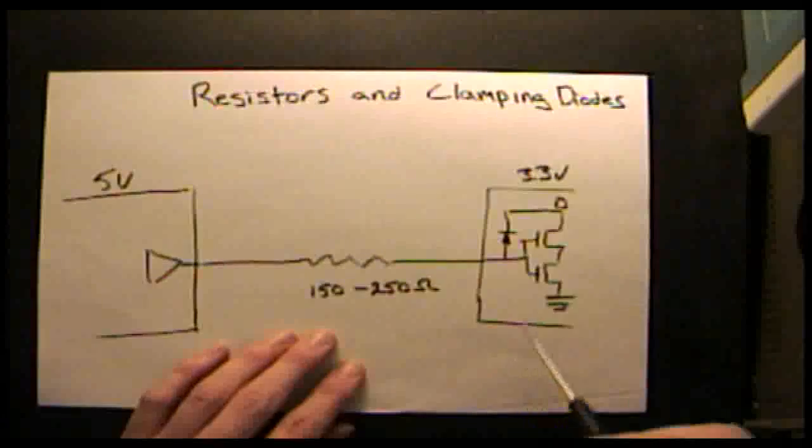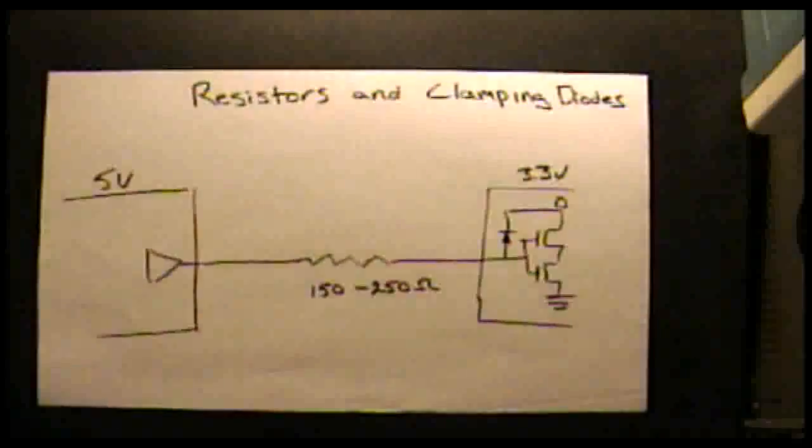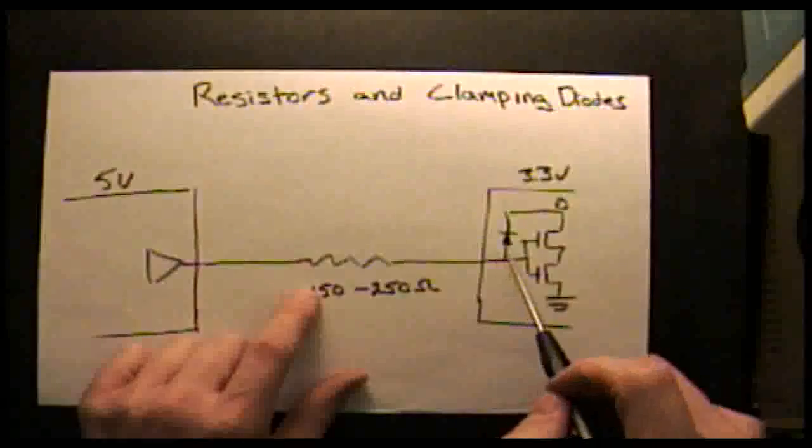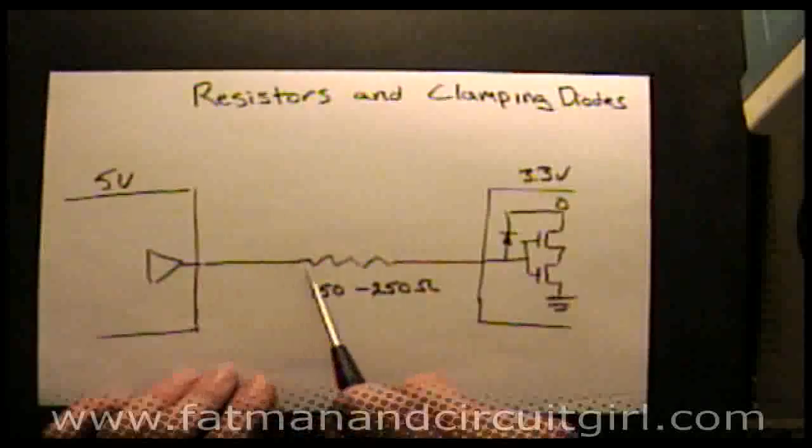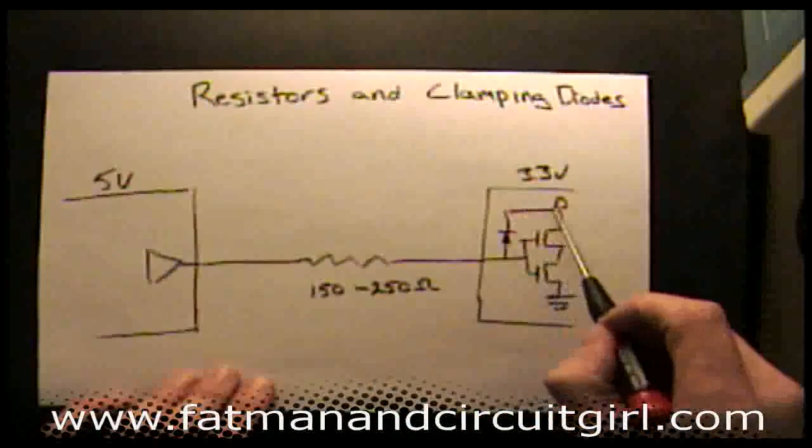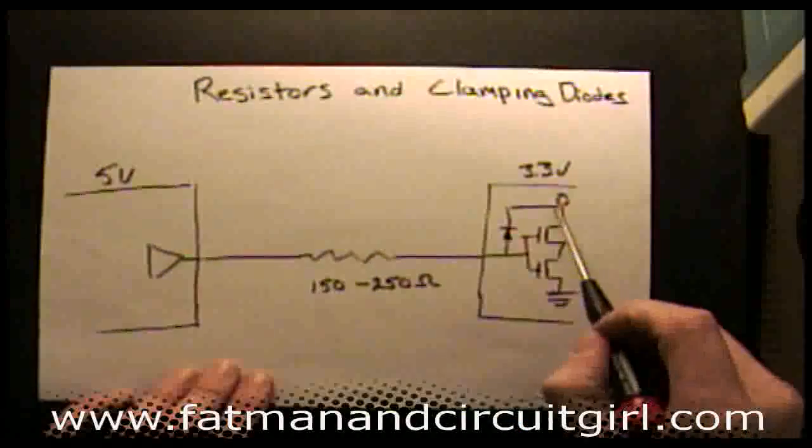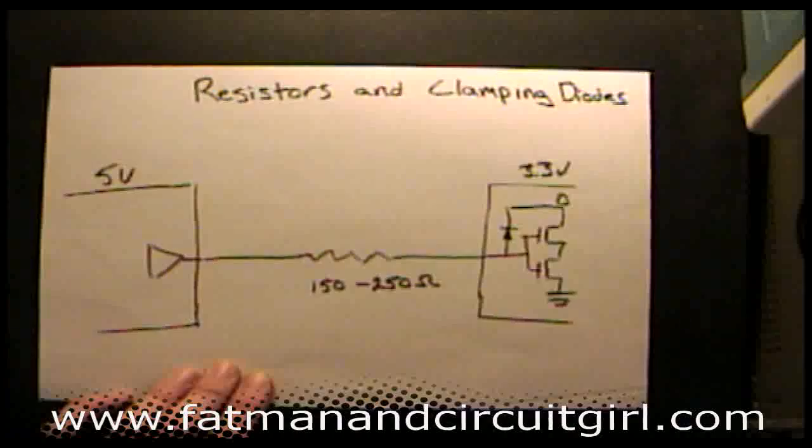Modern FPGAs have PCI clamping diodes, and you can use this to your advantage to protect the inputs from 5 volts. By putting a resistor in series, you can have voltage drop across the resistor and through the clamping diode. You'll probably want to use between 150 ohm to 250 ohm.